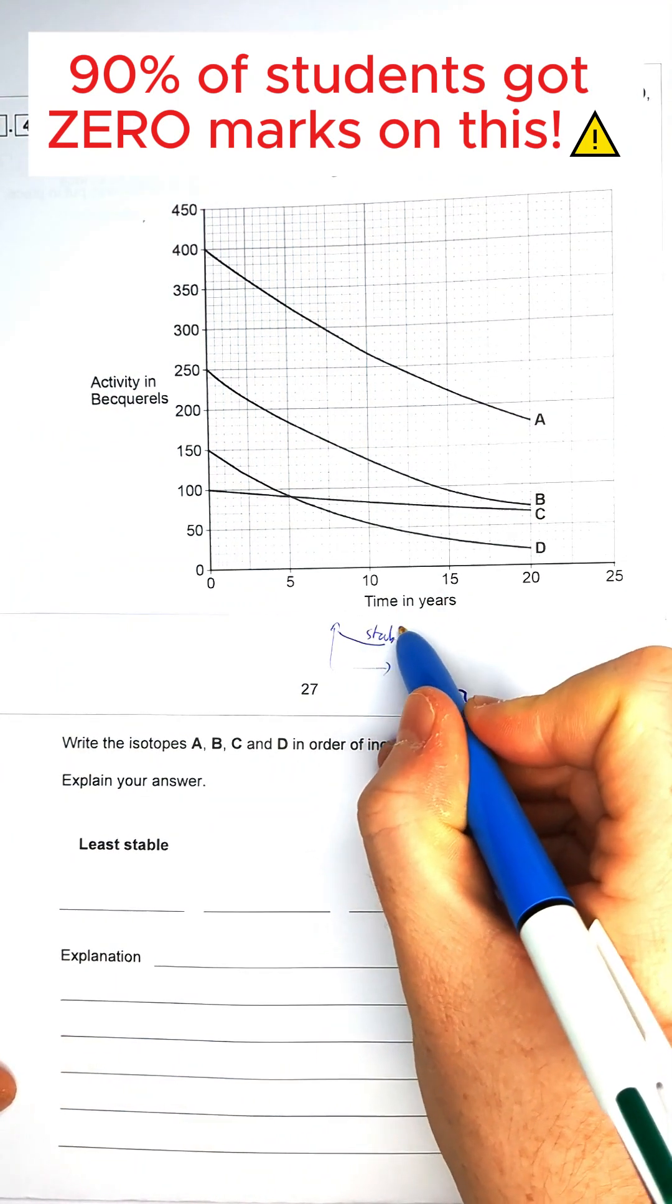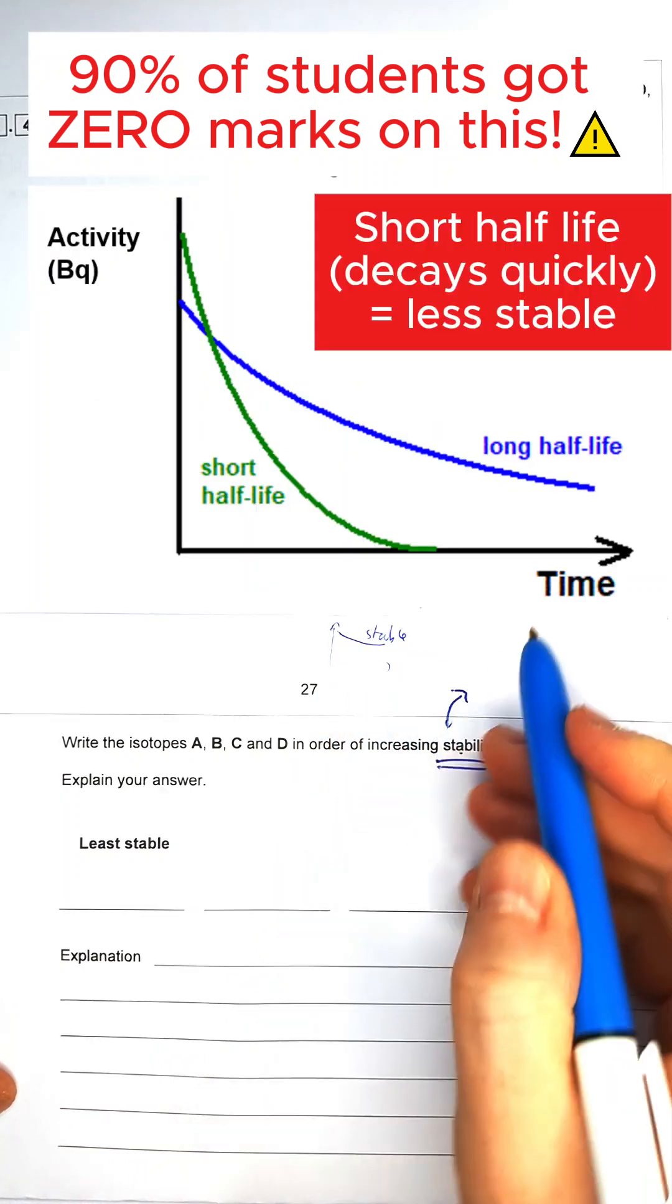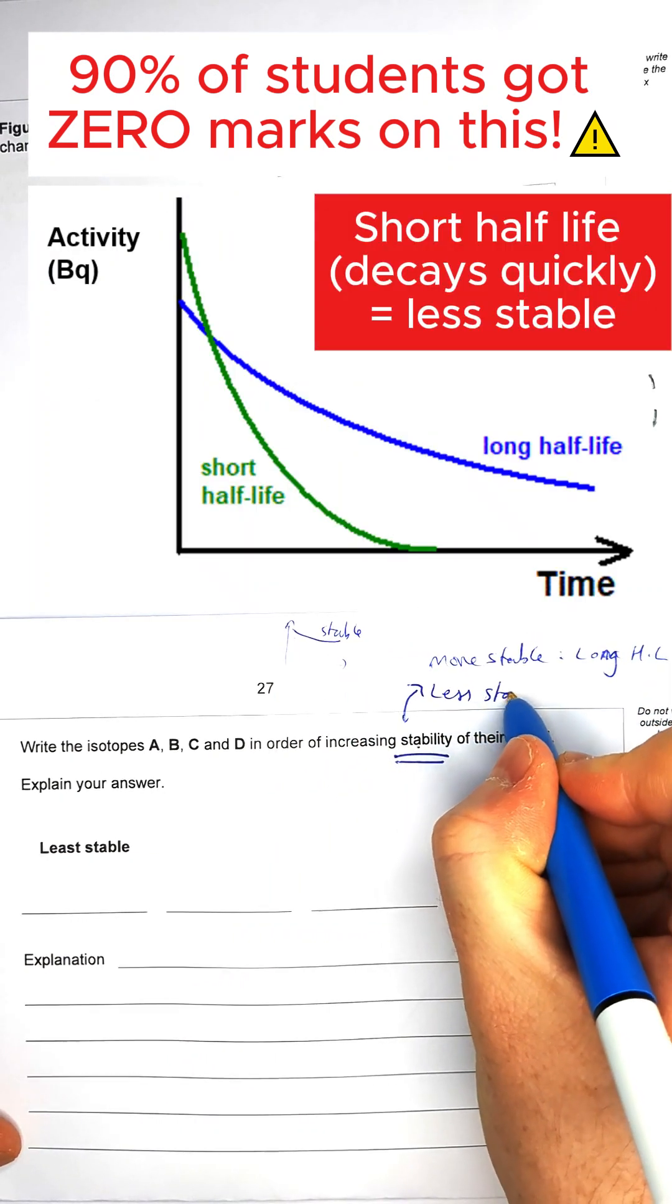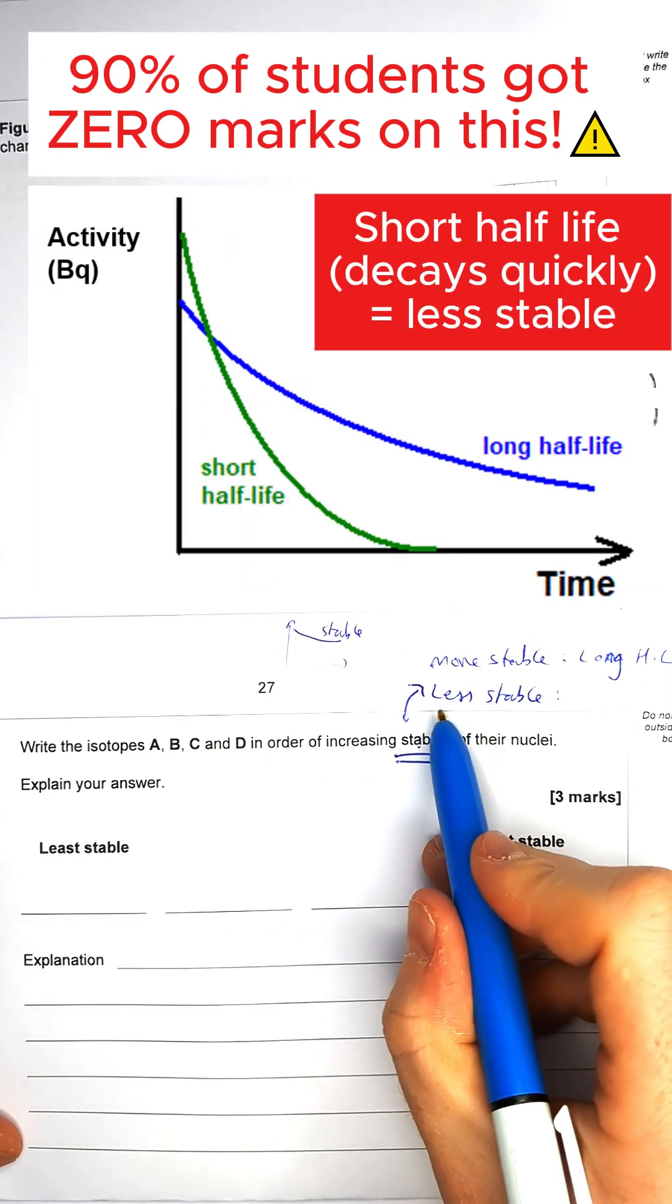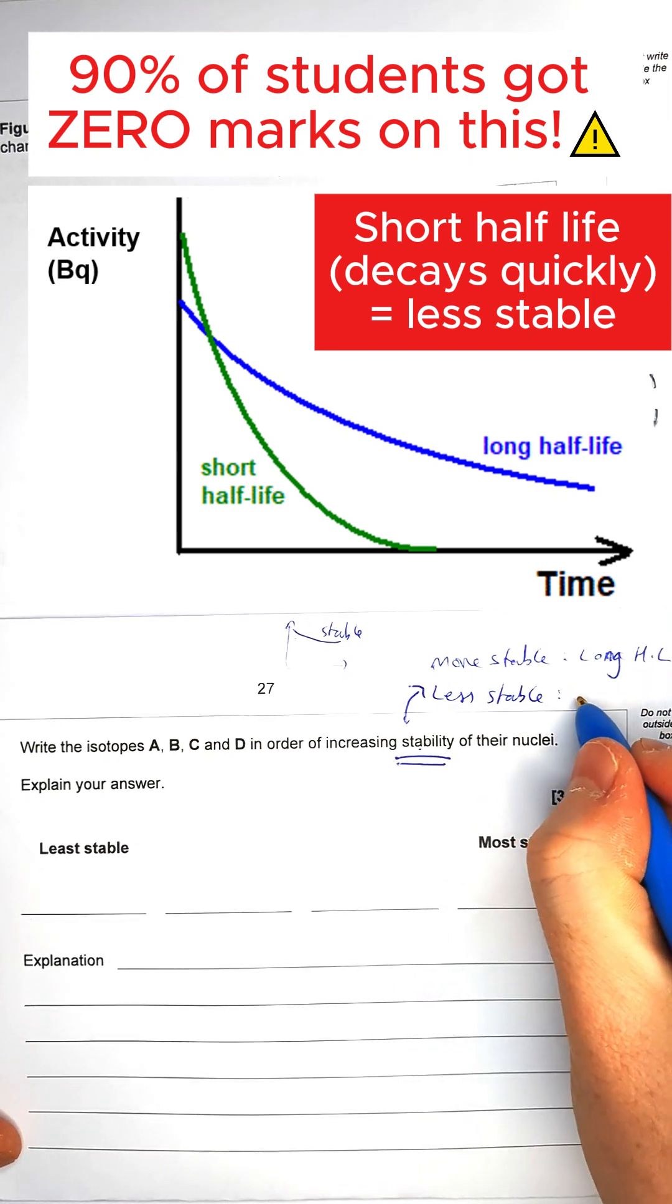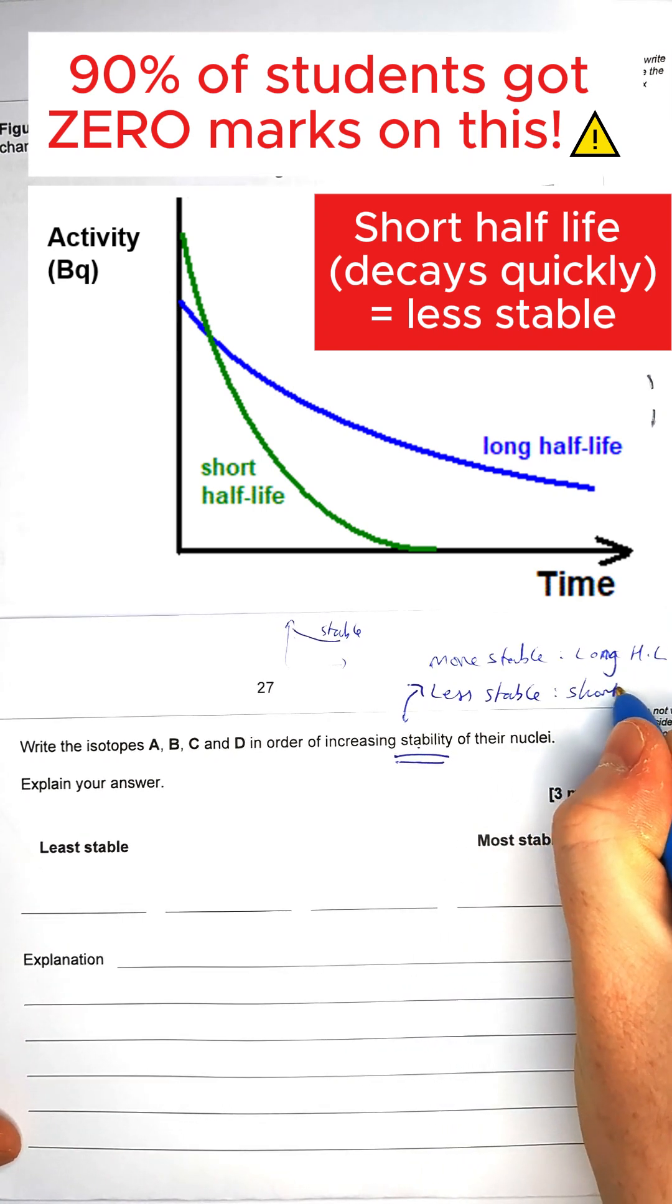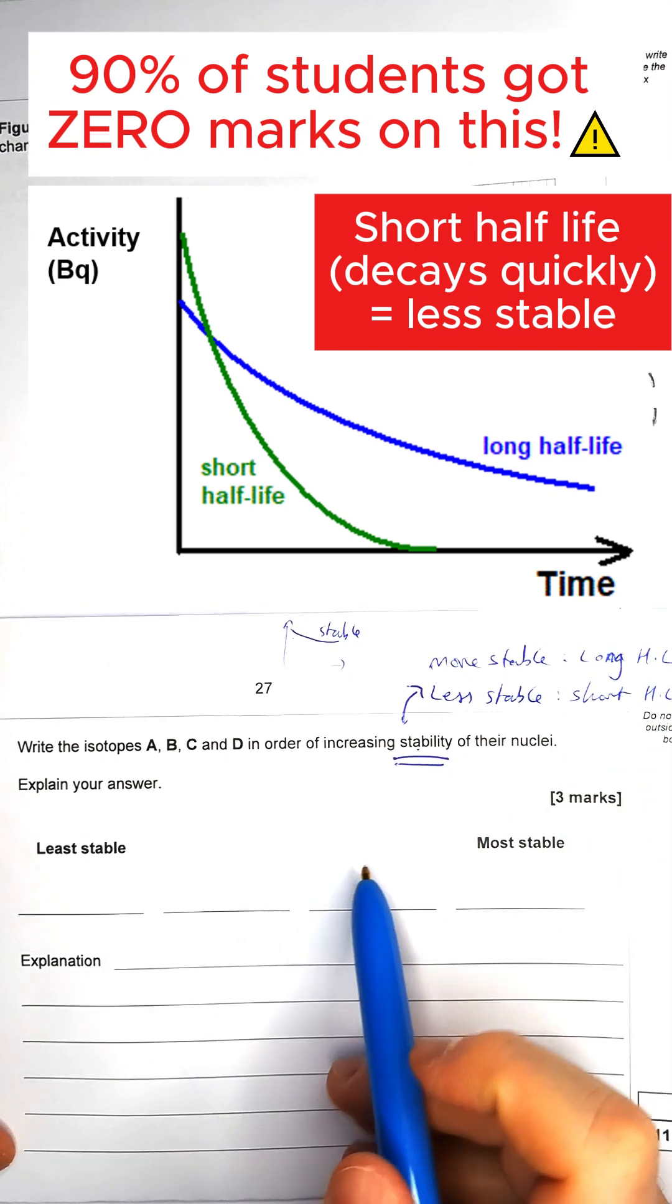So more stable meaning it's going to have a long half-life. Less stable means it's going to have a short half-life. So the more stable it is, the longer the half-life, the less stable it's going to have a short half-life, i.e. it's decaying very quickly.